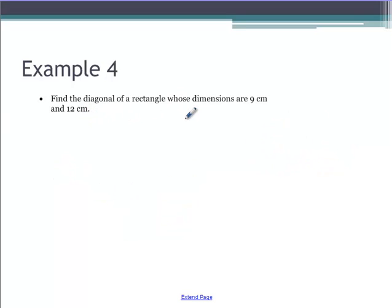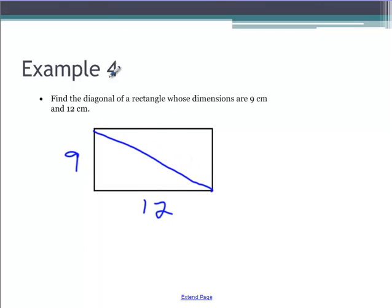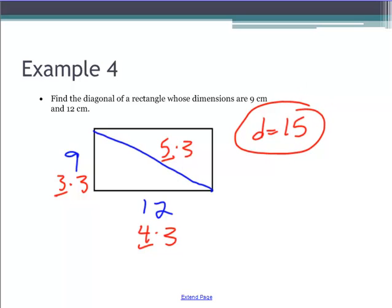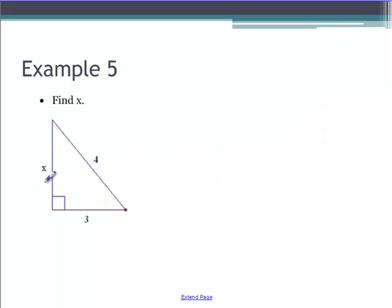Our next one: find the diagonal of a rectangle whose dimensions are 9 and 12. So we have a rectangle with dimensions of 9 and 12, and we have a diagonal. Well, 9 is 3 times 3, 12 is 4 times 3. This is going to be something times 3: 3, 4, and 5 is our last triple, so the diagonal is 15.